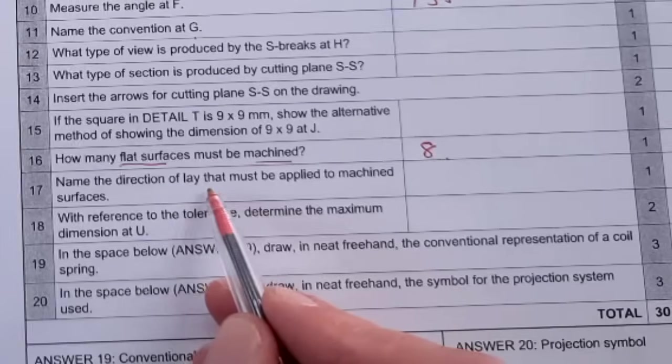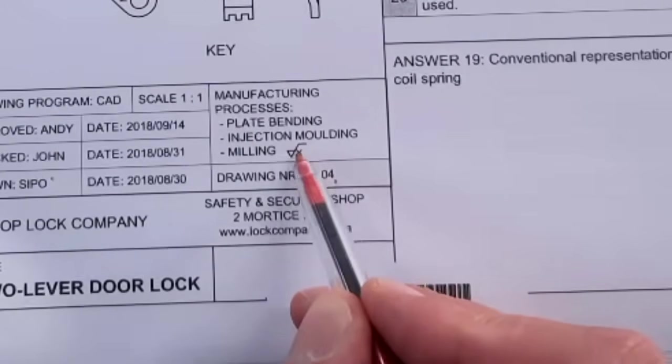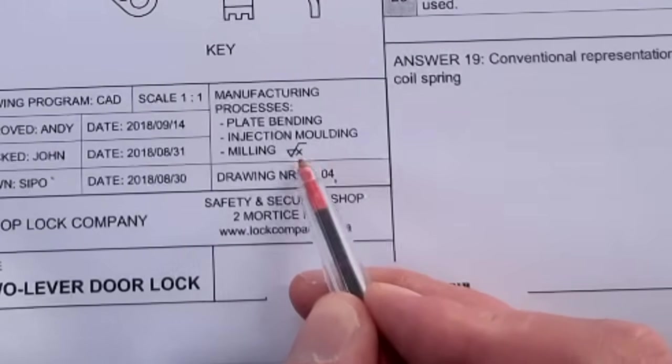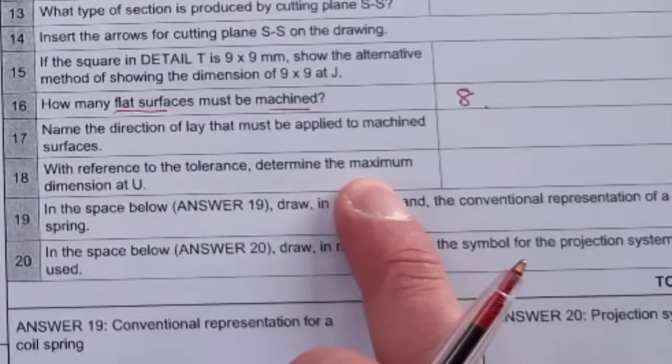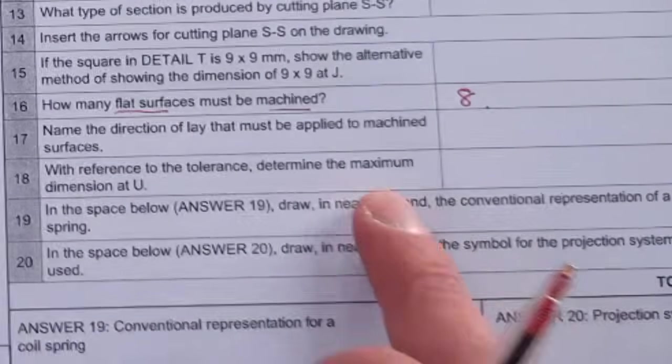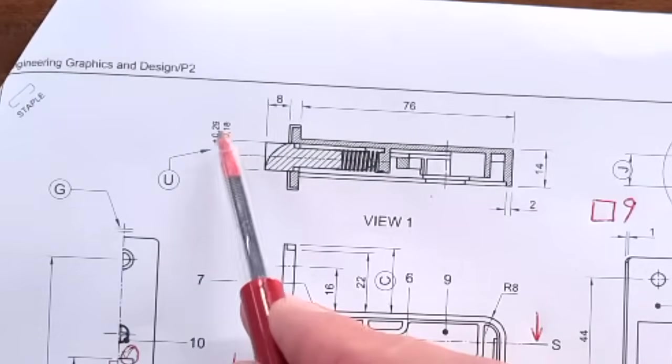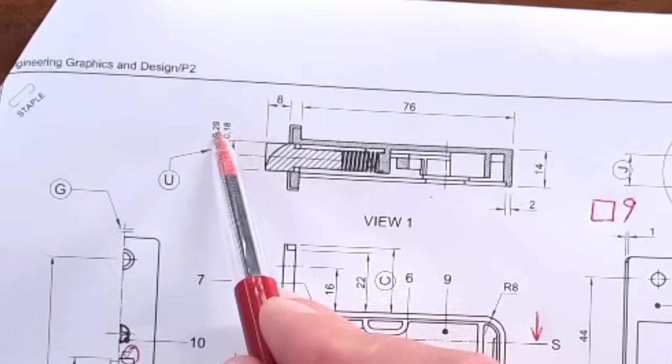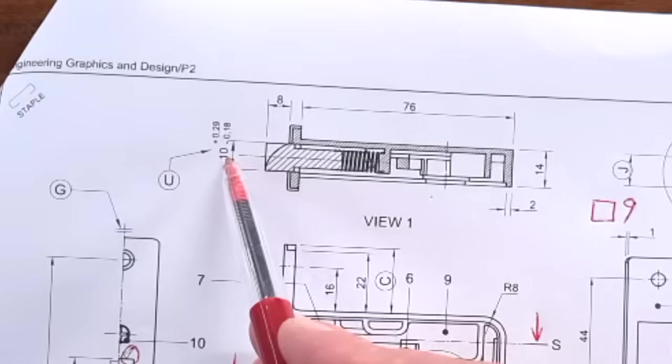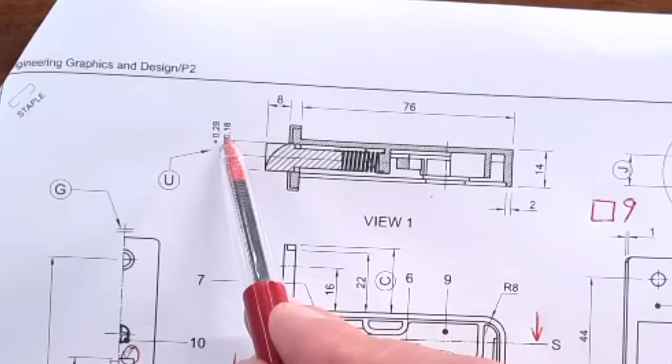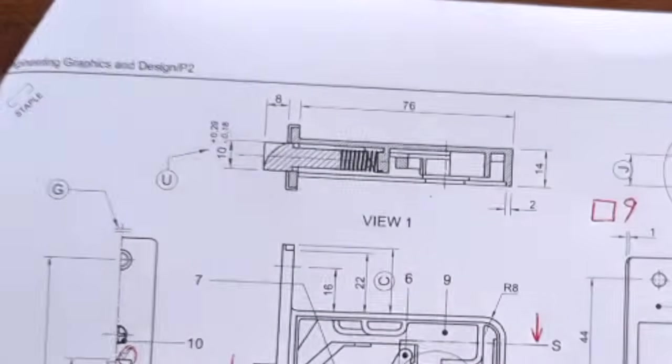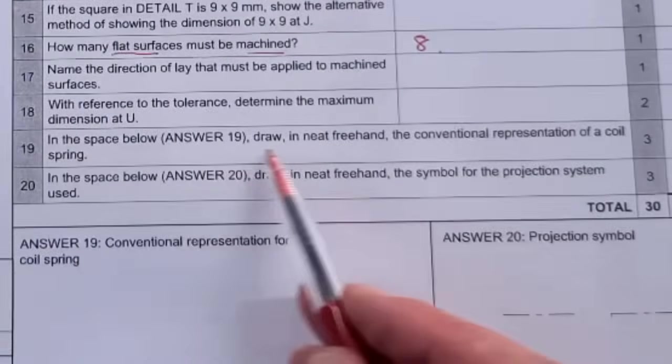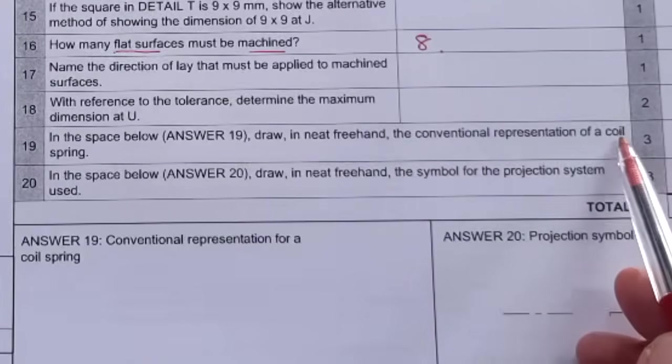Name the direction of lay that must be applied to machine surfaces. Now there's the actual milling, there's the milling symbol, and you see that X there is the one that indicates crossed. So the great answer is crossed. With reference to tolerance, determine the maximum dimension at U. Let's go up here. There's a 10. The maximum is going to be 10.29. If it was the minimum, it would have been 9.82, for instance. So there they show you the maximum and the minimum you can subtract that from the 10 to get to that answer.